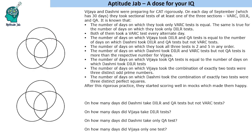We will have a Venn diagram like this — one for Vijaya and one for Dashmi. Since they took at least one test every day, all values must be filled inside these circles and should add up to 30, with no value outside. Let us mark VARC, DILR, and QA for each person.